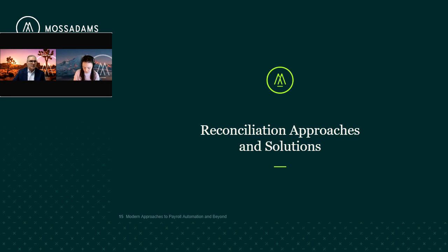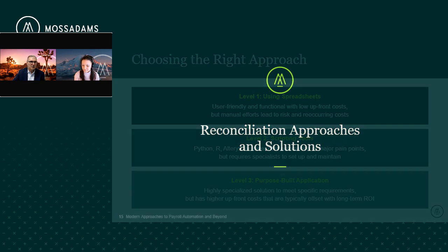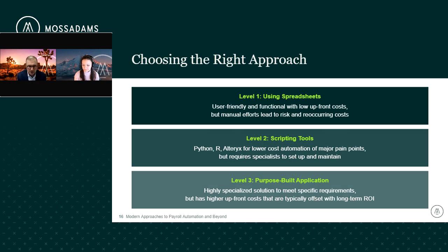We're going to highlight multiple levels of approach to reconciliation. As an advisor to clients, there's no one correct level — each one depends on the client's situation and circumstances. Level one: spreadsheets are very powerful. Many people, even at the largest companies, use them today to manage reconciliations. They are an incredibly powerful tool. There are other options including scripting — you can actually automate through macros and VBA script spreadsheets.